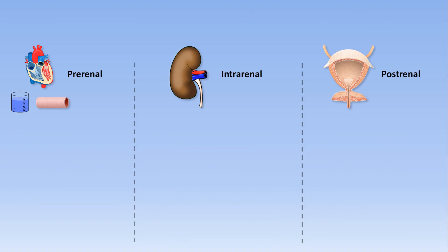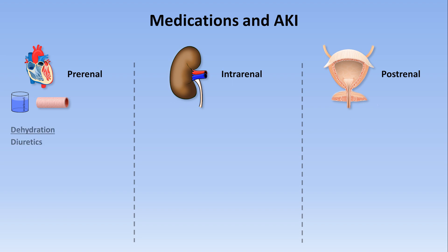Medication-induced AKI is one of the few causes of AKI which is iatrogenic, and it's a big enough problem to discuss in more detail. These medications can be grouped according to the mechanism by which they cause AKI, analogous to how all etiologies are grouped. First are those meds which cause pre-renal problems — the obvious ones are diuretics leading to dehydration. Another subcategory are meds which alter intrarenal autoregulation.